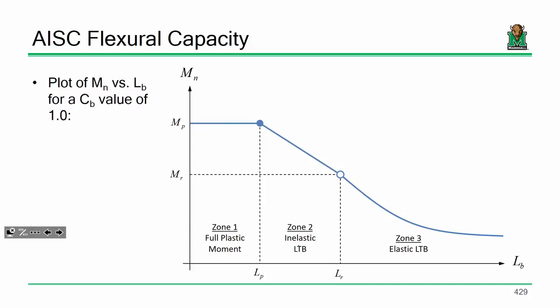So here's the fundamental beam curve, if you will. This is the flexural capacity of a steel wide flange cross section that's plotted as a function of unbraced length. So the first thing that you should notice is that as the unbraced length increases, the capacity tends to go down.